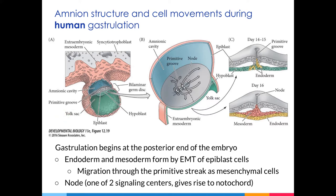In humans, gastrulation begins at around embryonic day 15. At this stage, the epiblast is a single layer of cells sitting on top of the hypoblast, also known as the primitive endoderm. The hypoblast is also a single layer of cells, but it extends downward to form the yolk sac. Part of the epiblast separates from the embryonic epiblast and forms the amnion, which fills with fluid. The epiblast and hypoblast are known as the bilaminar germ disc, and the movements of gastrulation, which will lead to the formation of the three germ layers, begin at this stage.